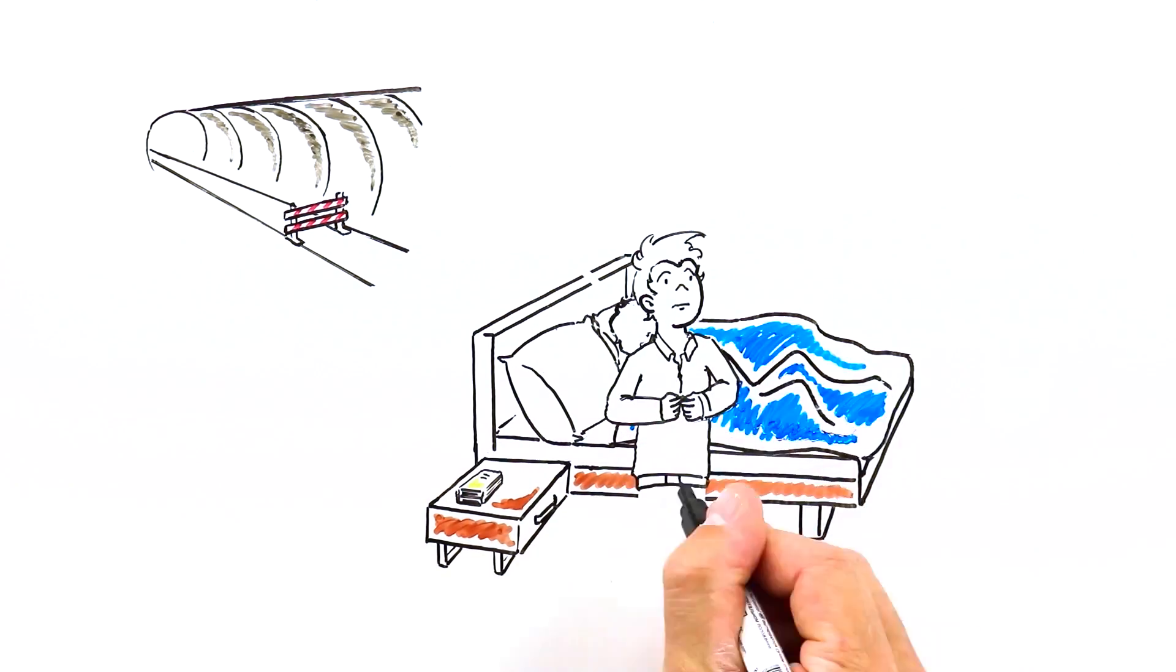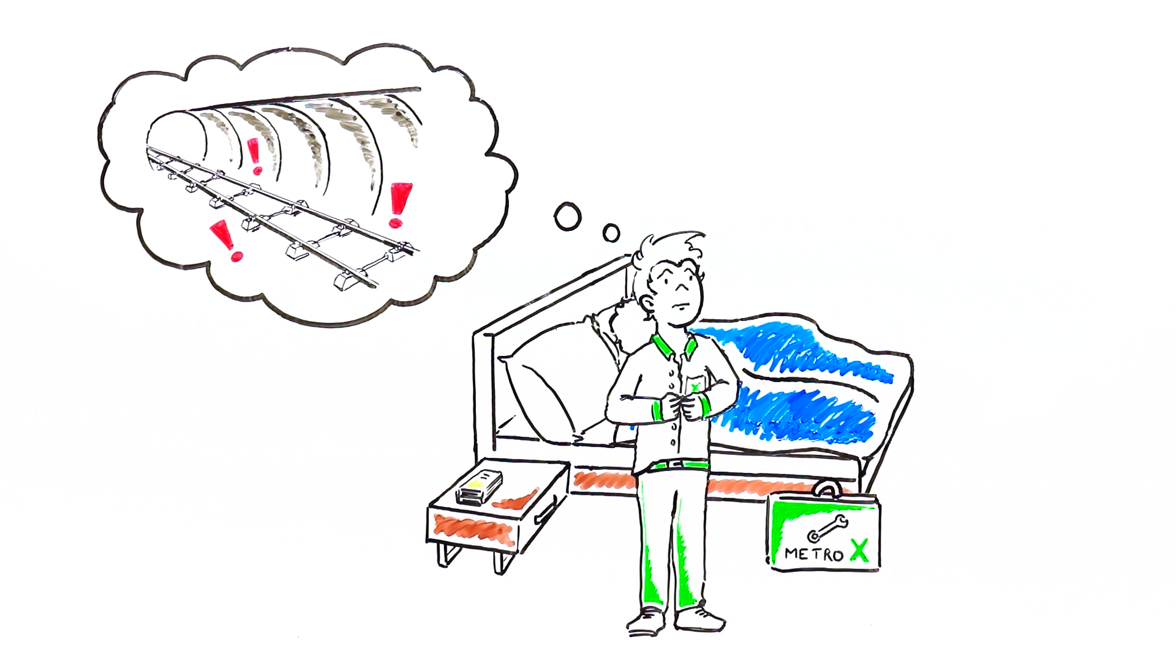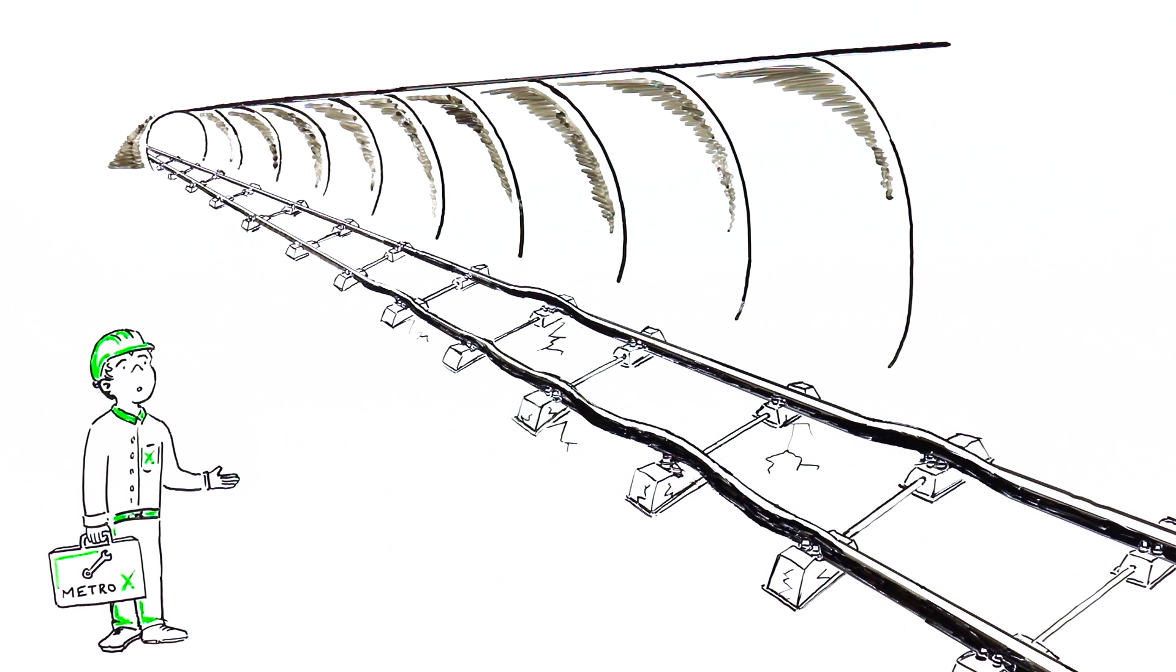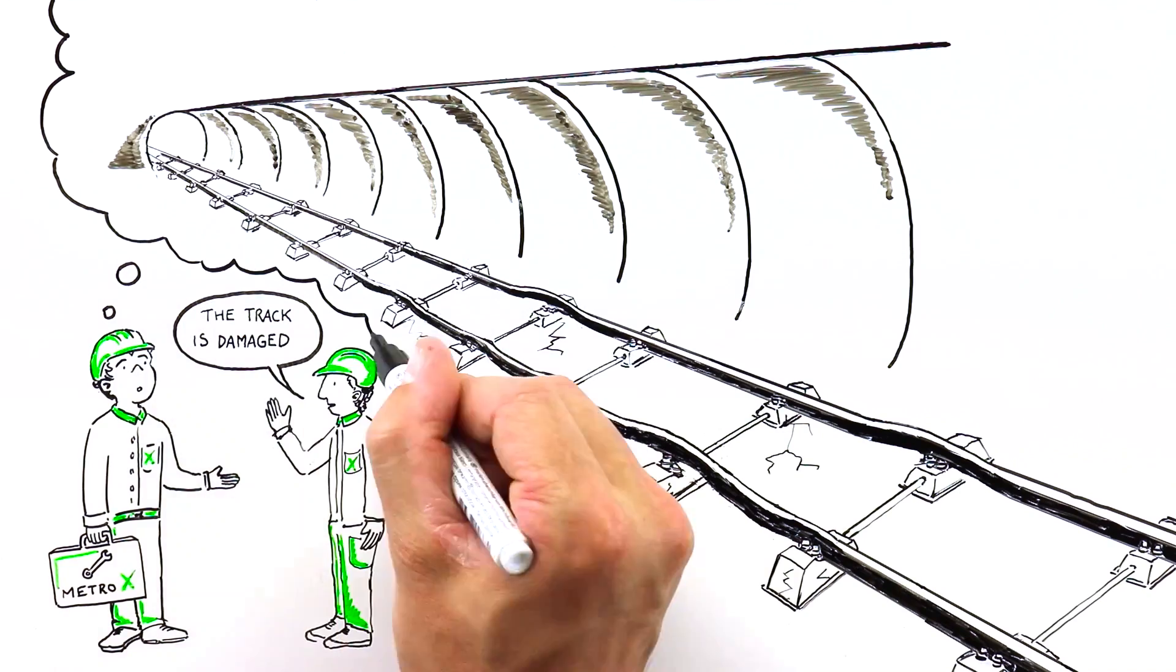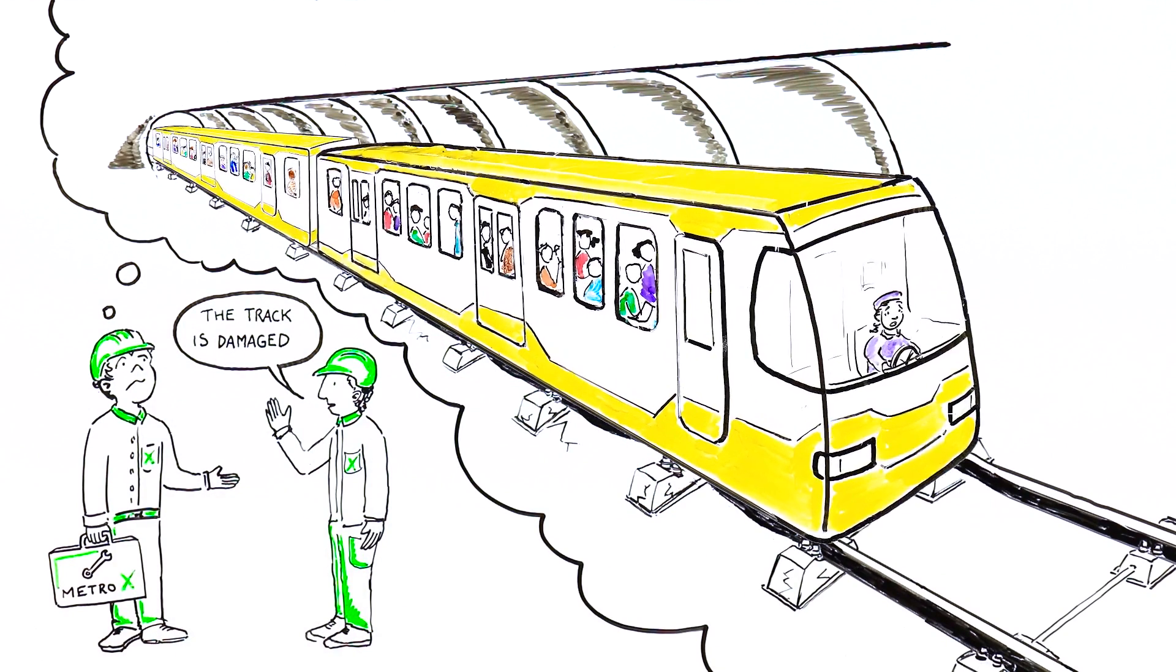He is the head of the maintenance department of Metro-X and he's had quite a few problems with their old booted block-based track. Tim hurries to the tunnel and hears that the track is damaged. He realizes that more dangerous situations could occur if he doesn't replace the blocks quickly.